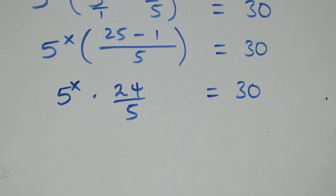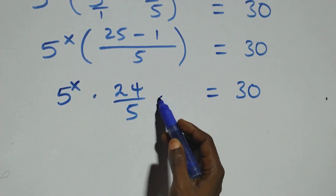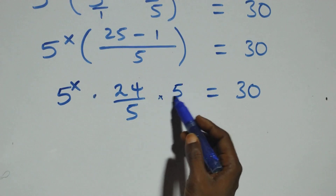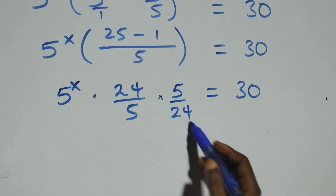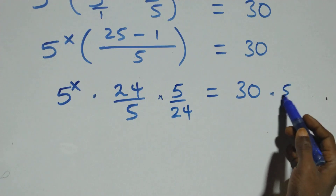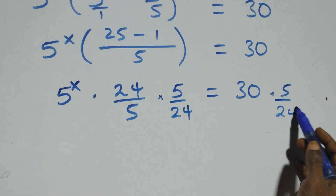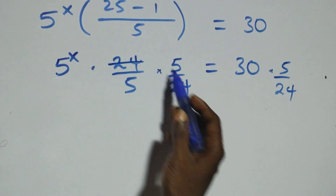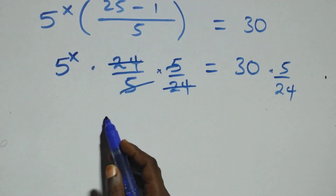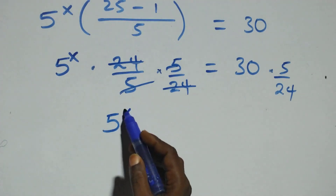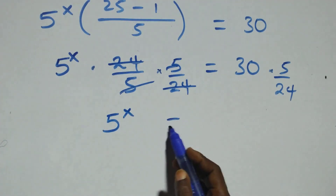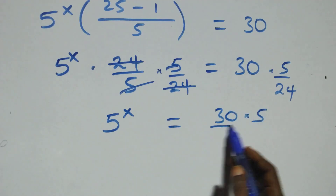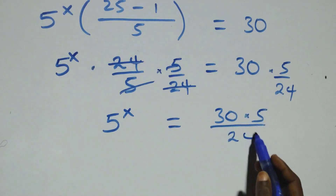To remove the 24 over 5, we multiply both sides by the reciprocal, that is 5 over 24. The 24 over 5 and 5 over 24 cancel each other, so we have 5 raised to power x equals to 30 times 5 over 24.